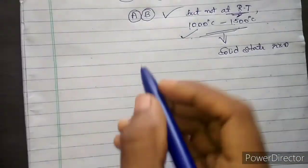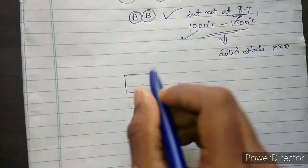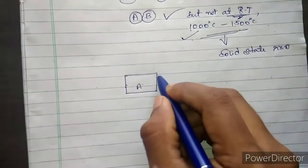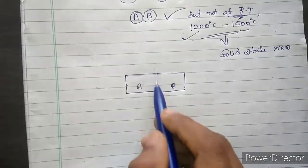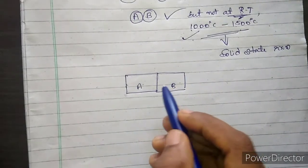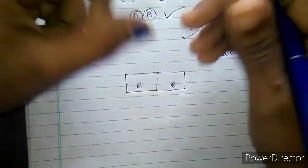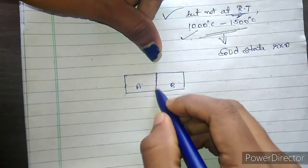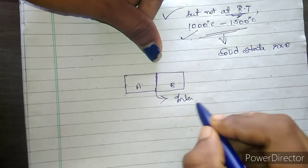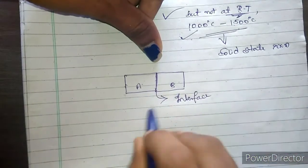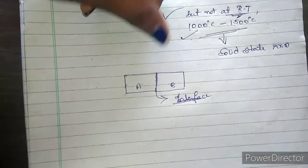Now just imagine I have two solids. This is one solid — I call it solid A. And I keep another solid B in contact with A. I just place these two solids touching each other. So now there is an interface — that is where they connect is called the interface, or solid interface. The interface is the point of contact between solids A and B.